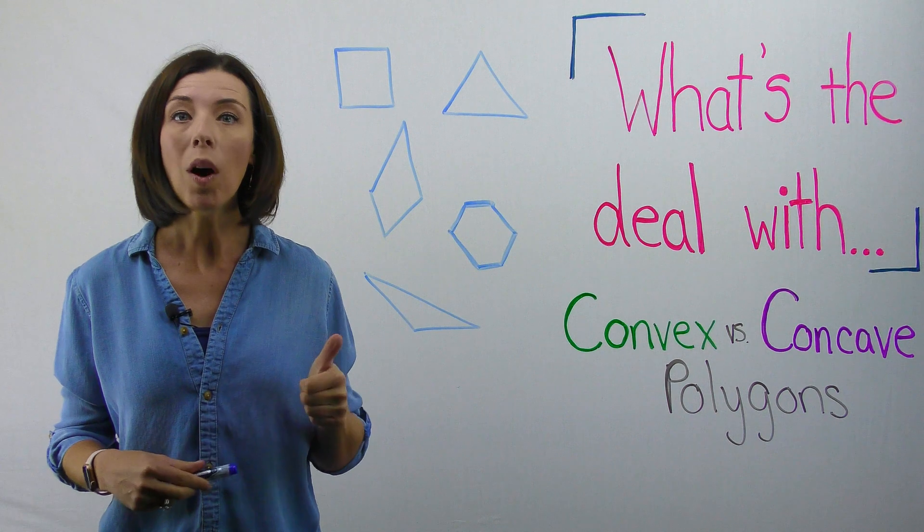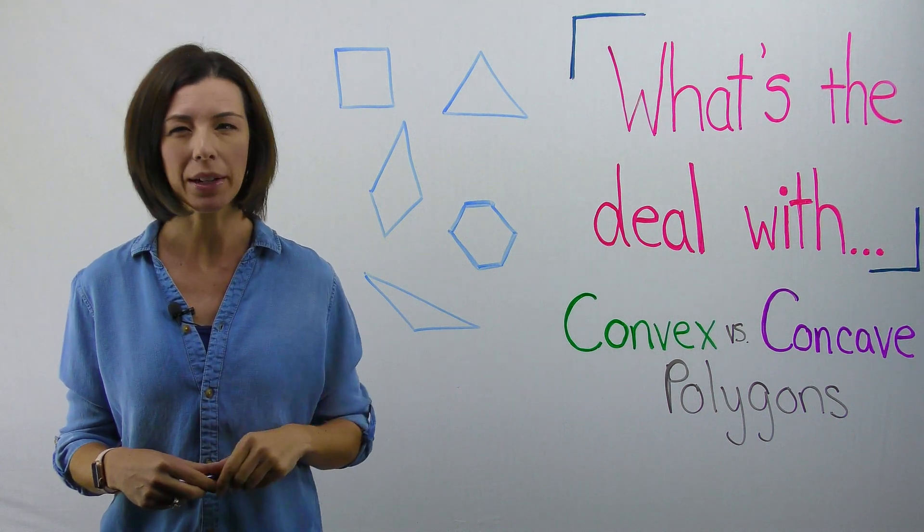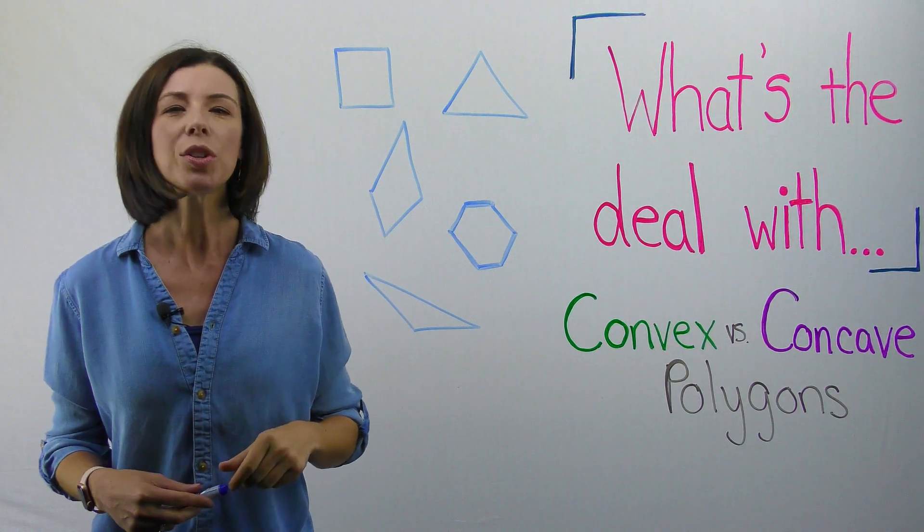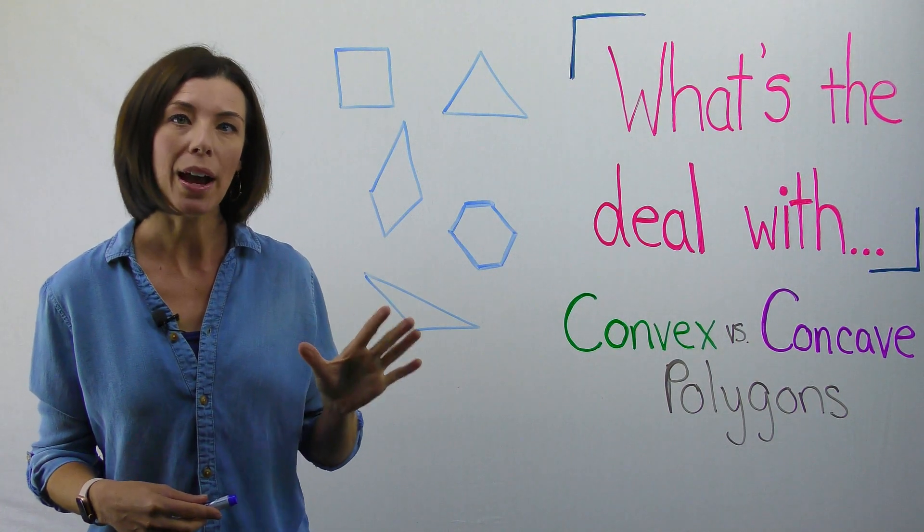Notice a couple of things. One, they don't have to be a regular polygon. So you'll notice that like this shape right here is not a regular polygon. So convex polygons don't have to be regular.